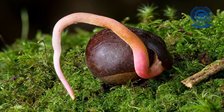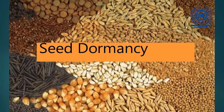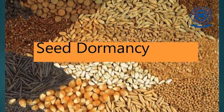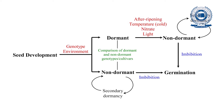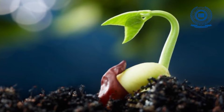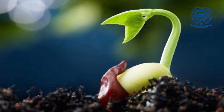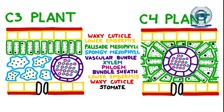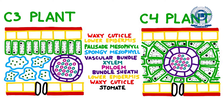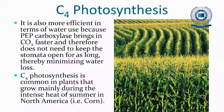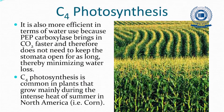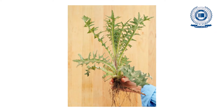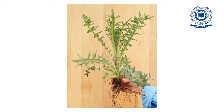Weed seeds possess the phenomenon of dormancy, which is an intrinsic physiological power of the seeds to resist. Weed seeds do not lose their viability for years even after adverse conditions. Most of the weeds possess C4 type of photosynthesis, which is an added advantage during moisture stress. They possess an extensive root system which goes deeper as well as of creeping type.